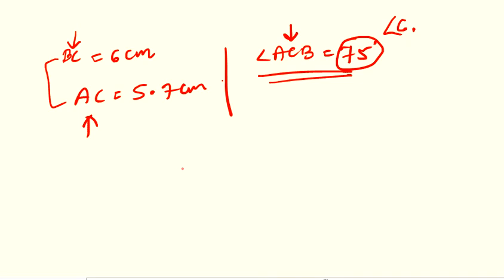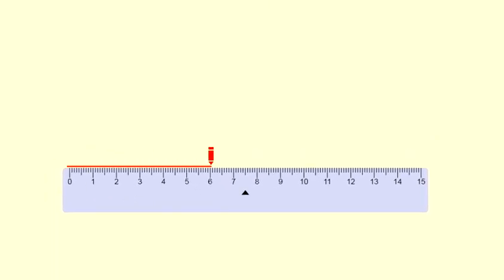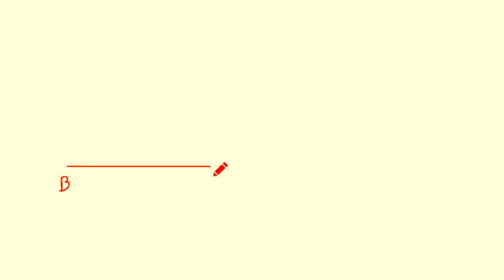You can draw line AC first or BC — no problem. So we are starting construction. First, draw a line segment BC of 6 cm. Here we have the line segment BC of 6 cm — this is B and this is C. Now we have angle ACB equals 75 degrees, which means at point C we have to construct an angle of 75 degrees. We need to use a protractor for this.